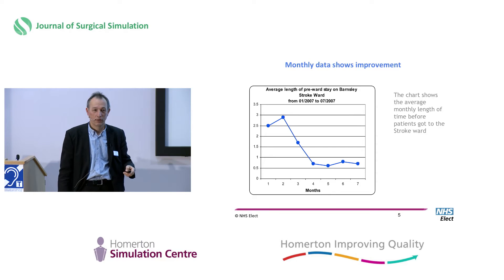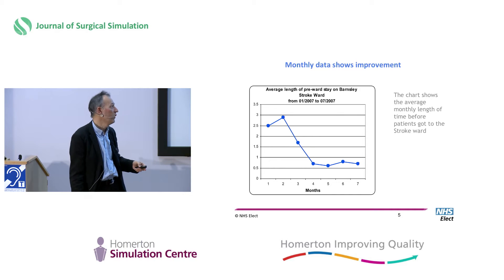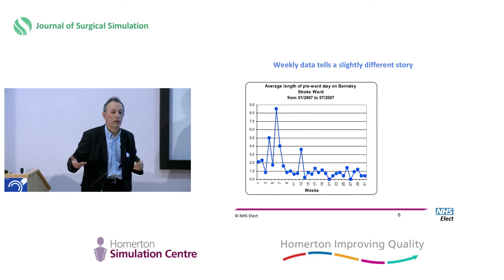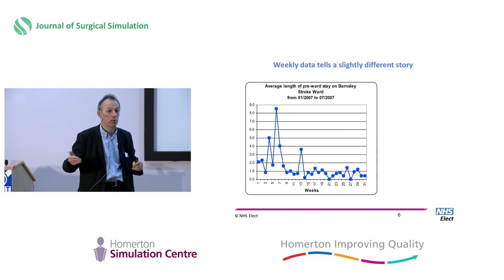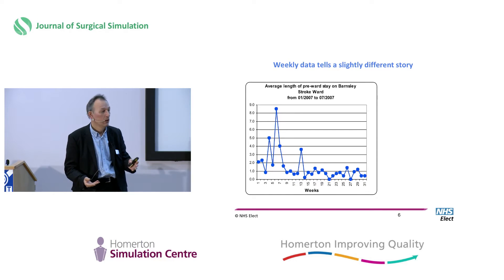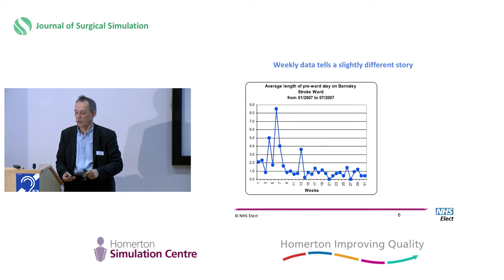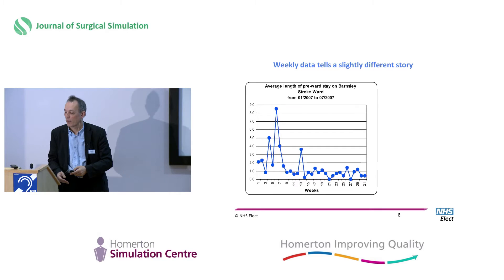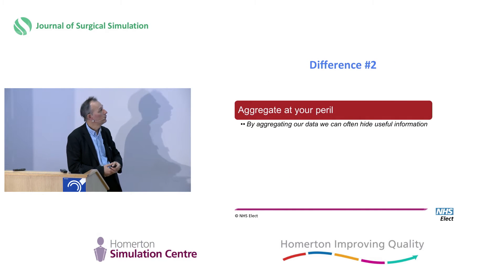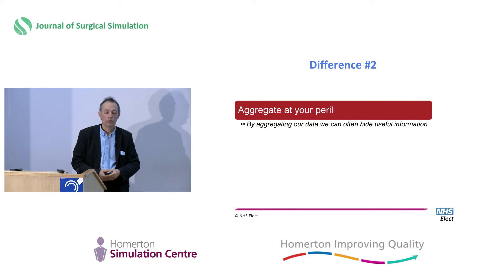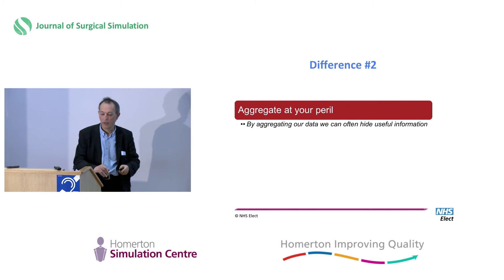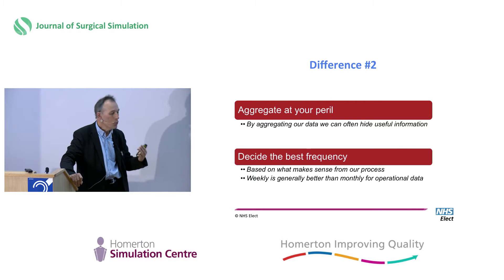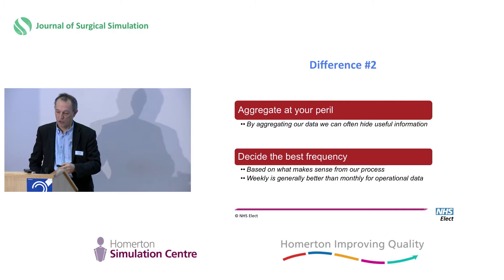So disaggregate your data. Don't plot it monthly unless you have no other alternative — plot it more frequently. Weekly is often a very useful frequency, but sometimes you might want to plot it day by day, or hour by hour, or even patient by patient. It just depends on what you're looking at. The more you plot the dots, the more the patterns and the special causes emerge. Difference two: aggregate at your peril. By aggregating our data we often hide useful information. Decide the best frequency to plot your dots over time based on what makes sense from the data. Weekly is generally better than monthly for operational data.